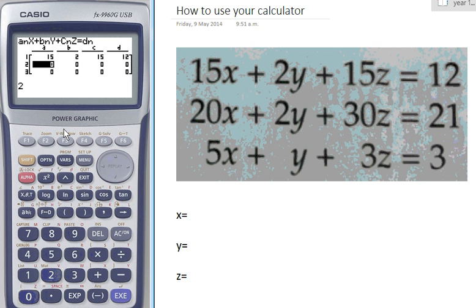For our next equation, we've got 20, 2, 30, and it's equal to 21. And our last equation, we've got 5, and we've got 1Y so we'll put in 1. Then we've got 3, and it's all equal to 3.